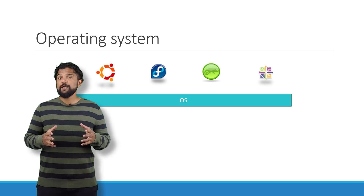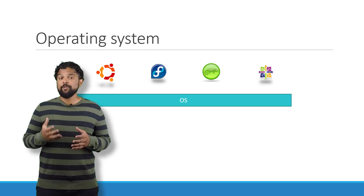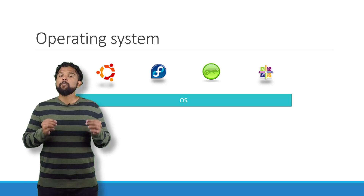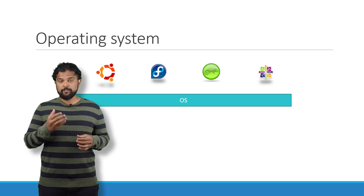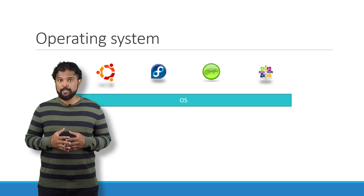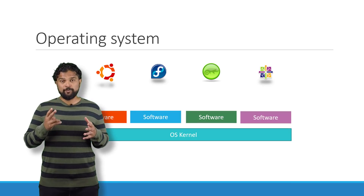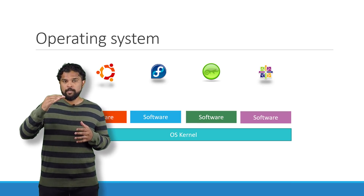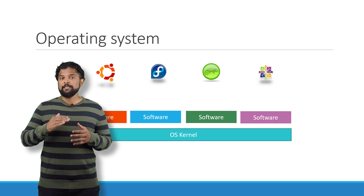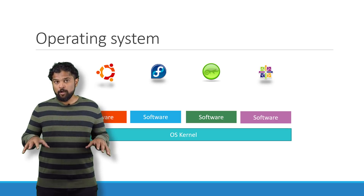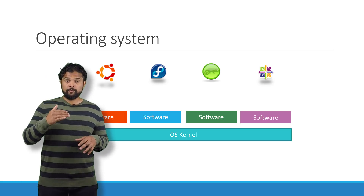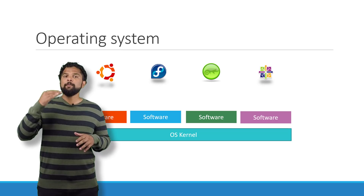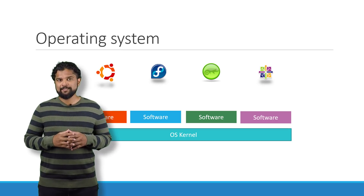To understand how Docker works, let us revisit some basic concepts of operating systems first. If you look at operating systems like Ubuntu, Fedora, SUSE, or CentOS, they all consist of two things: an OS kernel and a set of software. The operating system kernel is responsible for interacting with the underlying hardware. While the OS kernel remains the same — which is Linux in this case — it's the software above it that makes these operating systems different.